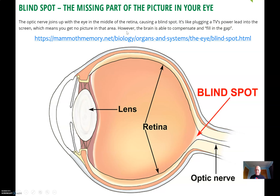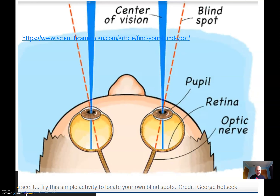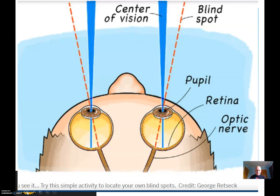Our brains have got two tricks to compensate and fill the gap. The first trick is that we've got two eyeballs with two blind spots in two different places — this eyeball's blind spot is here, this eyeball's blind spot is out there. The second trick is that the human brain, if it doesn't have information from the other eyeball, sort of figures out what's around it and puts something in that slot, and hopefully it's normally right — but you can make it so that it is not right.